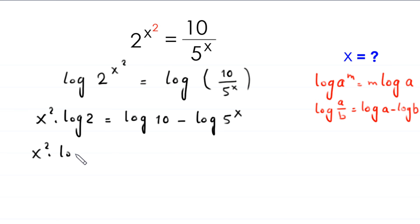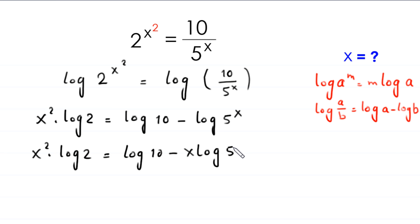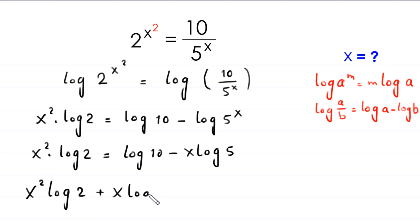So x squared times log of 2 equals log of 10 minus x times log of 5. Moving these two terms to the left hand side, this becomes: x squared times log of 2 plus x times log of 5 minus log of 10 is equal to 0.